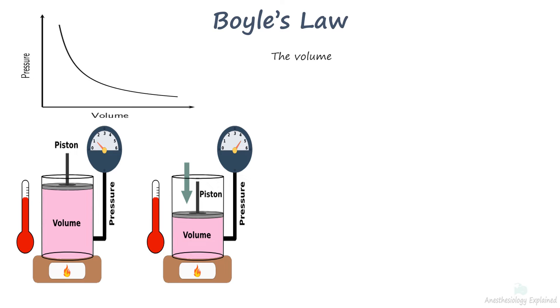Boyle's law is a gas law which states that the pressure exerted by a given mass of gas at a constant temperature is inversely proportional to the volume occupied by it. In other words, the pressure and volume of a gas are inversely proportional to each other as long as the temperature and the quantity of gas are kept constant.